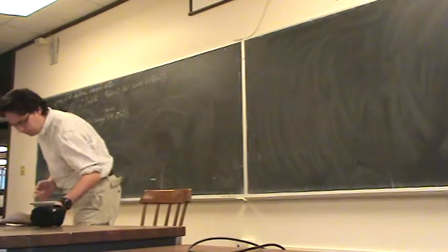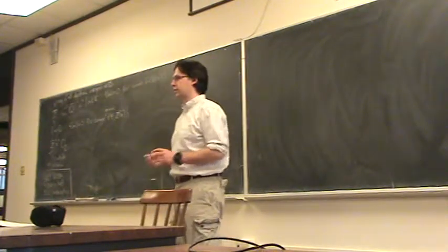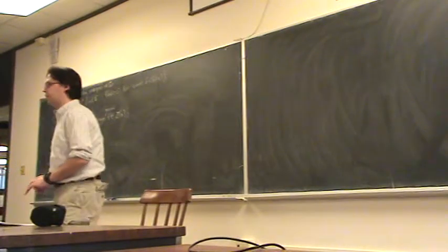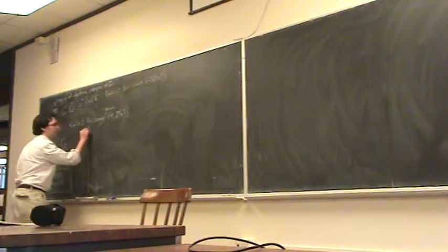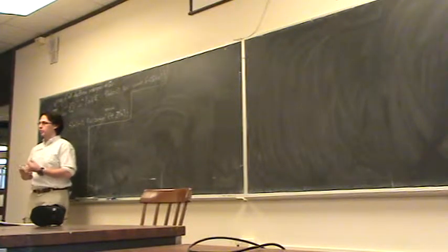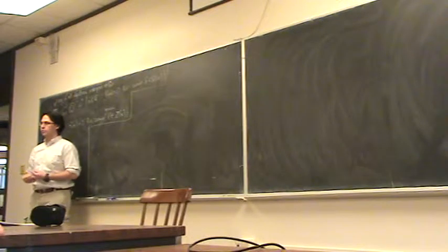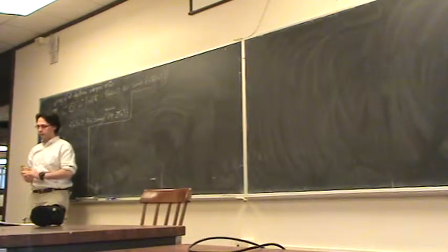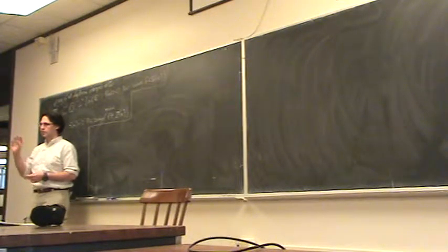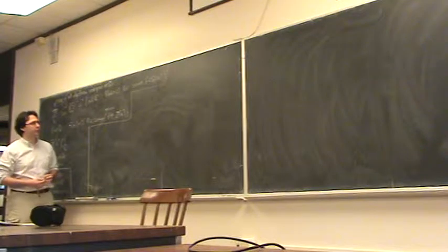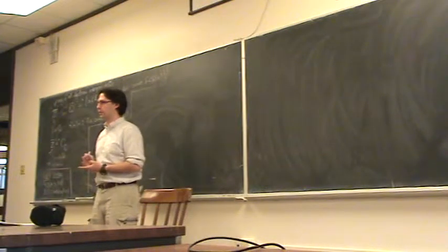We're going to start with chapter three of the book right now, so make sure you've read through chapter two. Chapter three is about Dedekind domains and unique factorization of ideals. The plan for this week is to define Dedekind domains, prove that the rings of integers in number fields are Dedekind domains, establish the properties of Dedekind domains — namely that every non-zero ideal factors uniquely as a product of prime ideals — and then on Friday I'll talk about how to use Sage to do calculations related to this course.